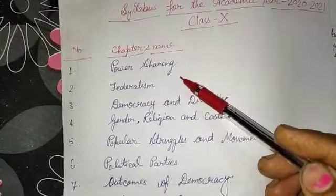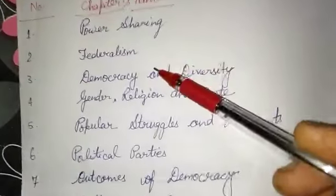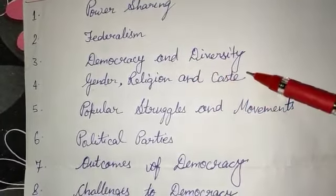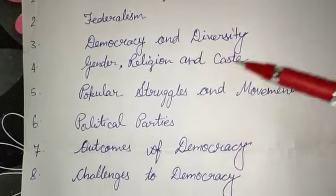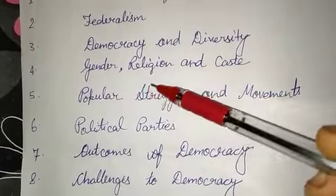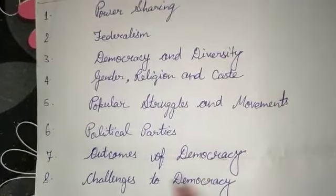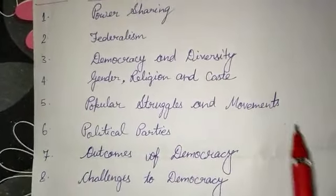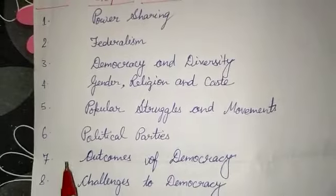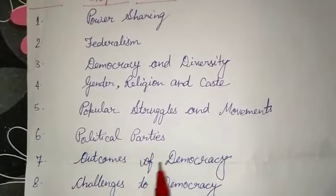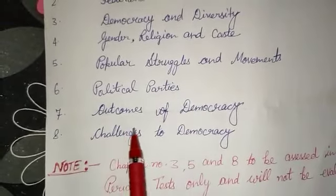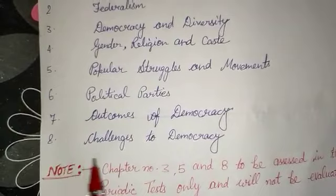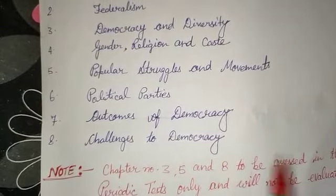First chapter is Power Sharing. Second, Federalism. Third, Democracy and Diversity. Fourth, Gender, Religion and Caste. Fifth, Popular Struggles and Movement. Sixth, Political Parties. Seventh, Outcomes of Democracy. Eighth, Challenges to Democracy.